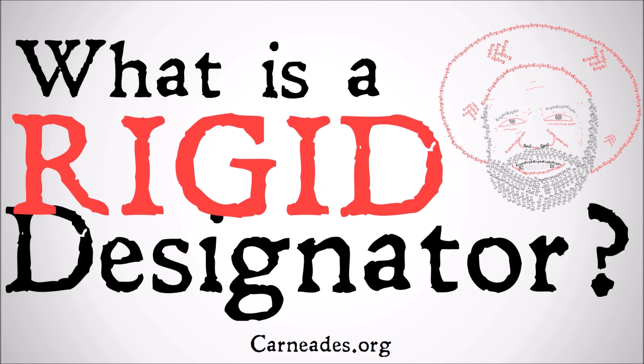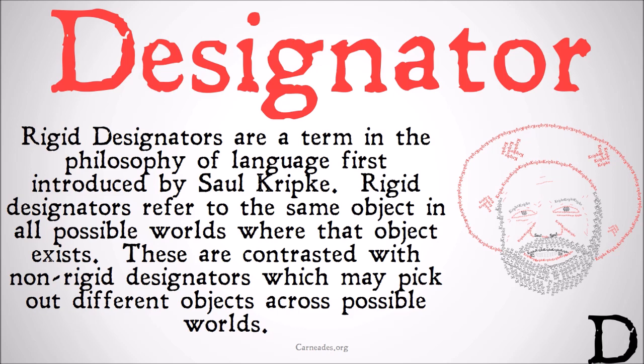Rigid designators are a term in the philosophy of language first introduced by Saul Kripke. Rigid designators refer to the same object in all possible worlds where that object exists.